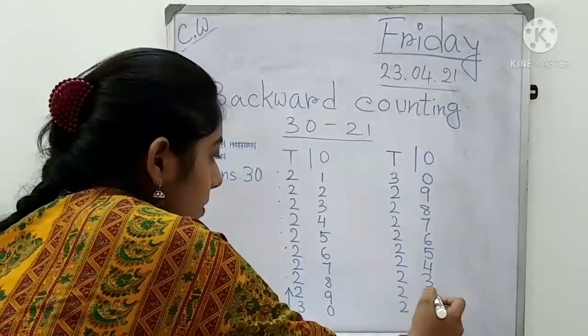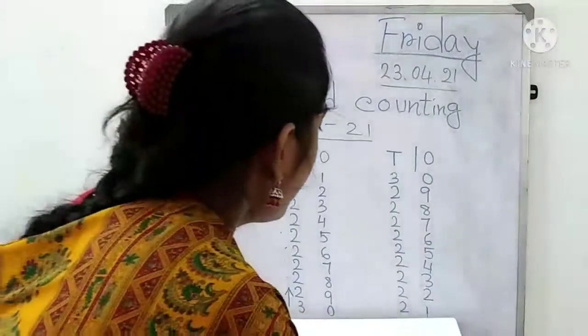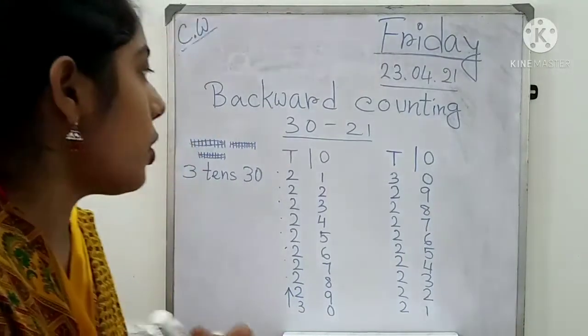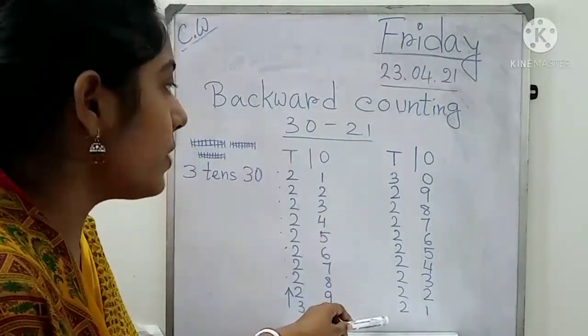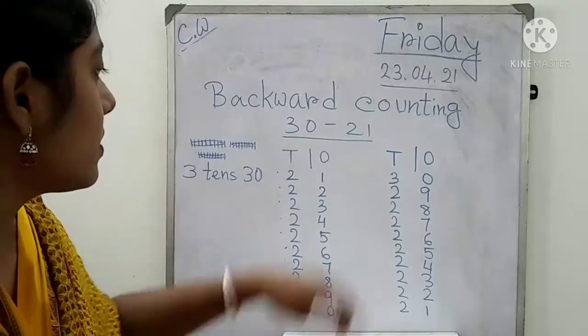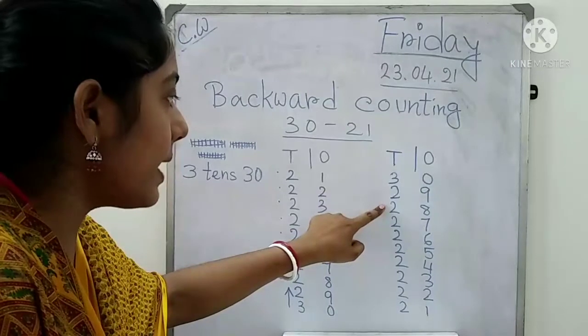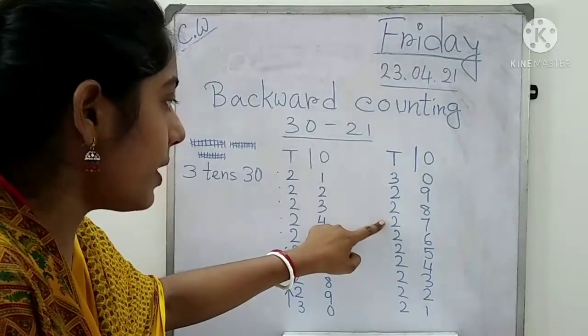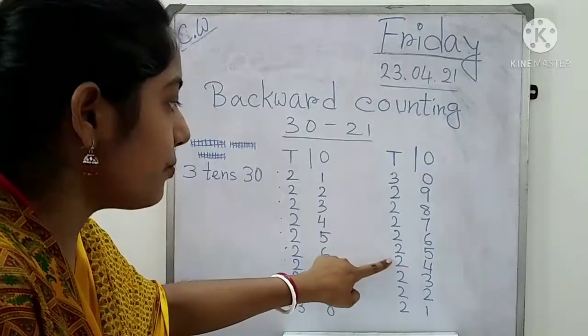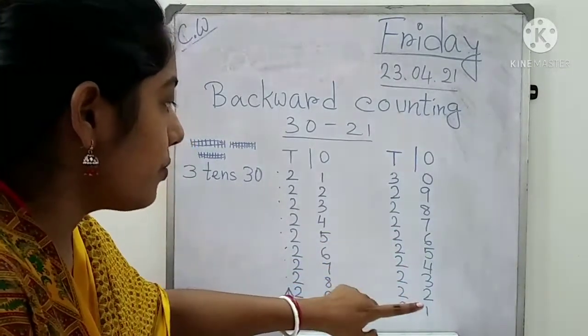So children, here we have written the backward numbers from 30 to 21. Everyone read with me: 30, 29, 28, 27, 26, 25, 24, 23, 22, 21.